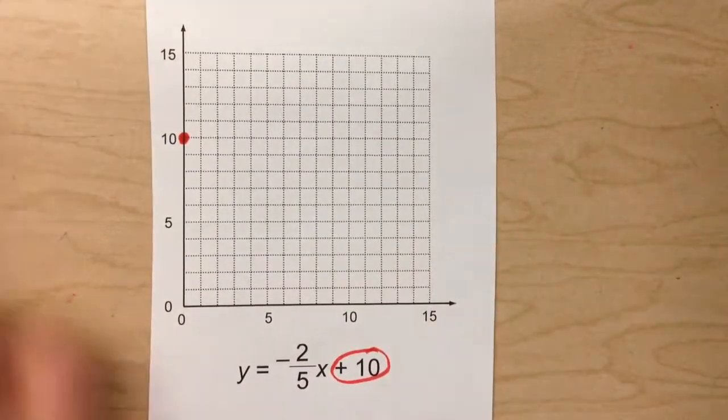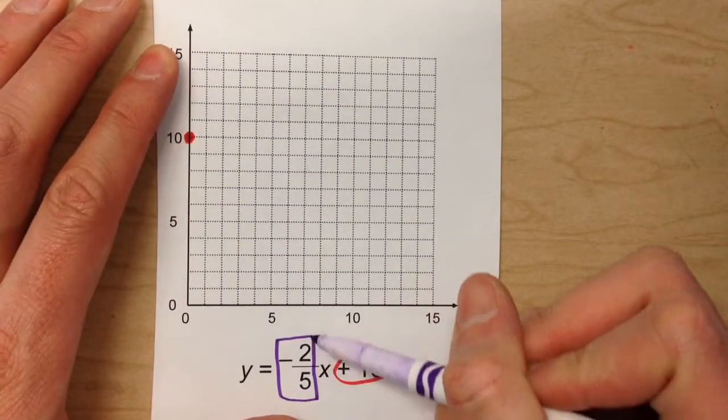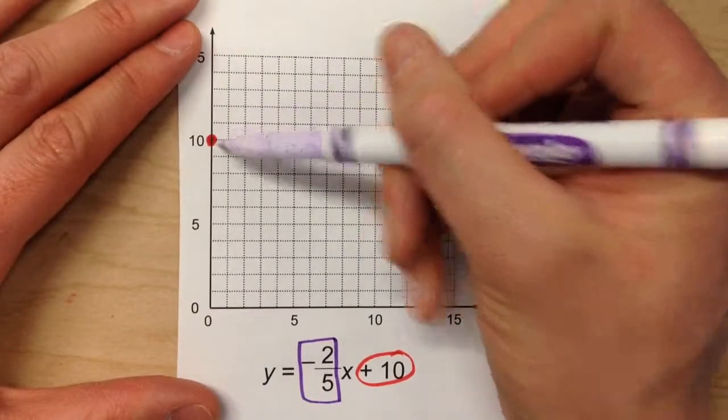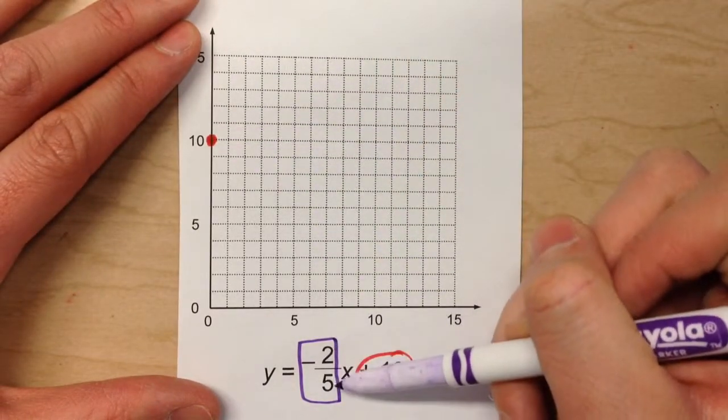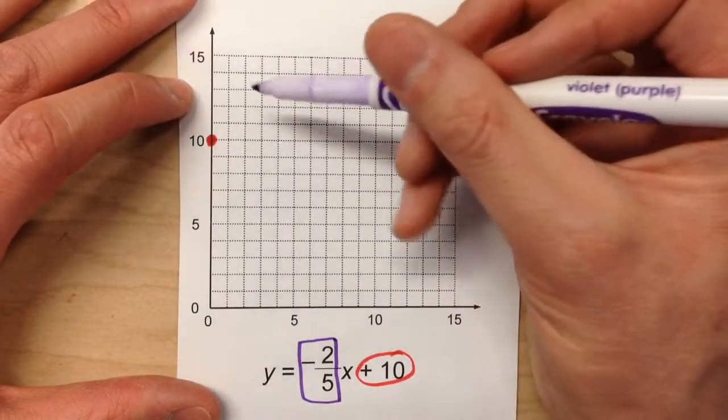Now, the slope is negative 2 fifths. So what that tells us is, from here, we're going to have to go down 2 fifths of a square every time over. And that's going to be kind of difficult.